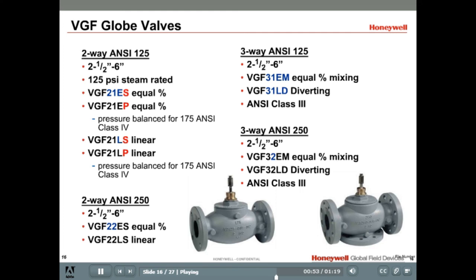The three-way models are also available with either ANSI class 125 or ANSI 250 and come in sizes from two and a half to six inches. Both ANSI class 125 and 250 models offer an ANSI class 3 seat leakage rating with various close-off ratings depending on the actuator model used. There are models available for mixing and for diverting applications.